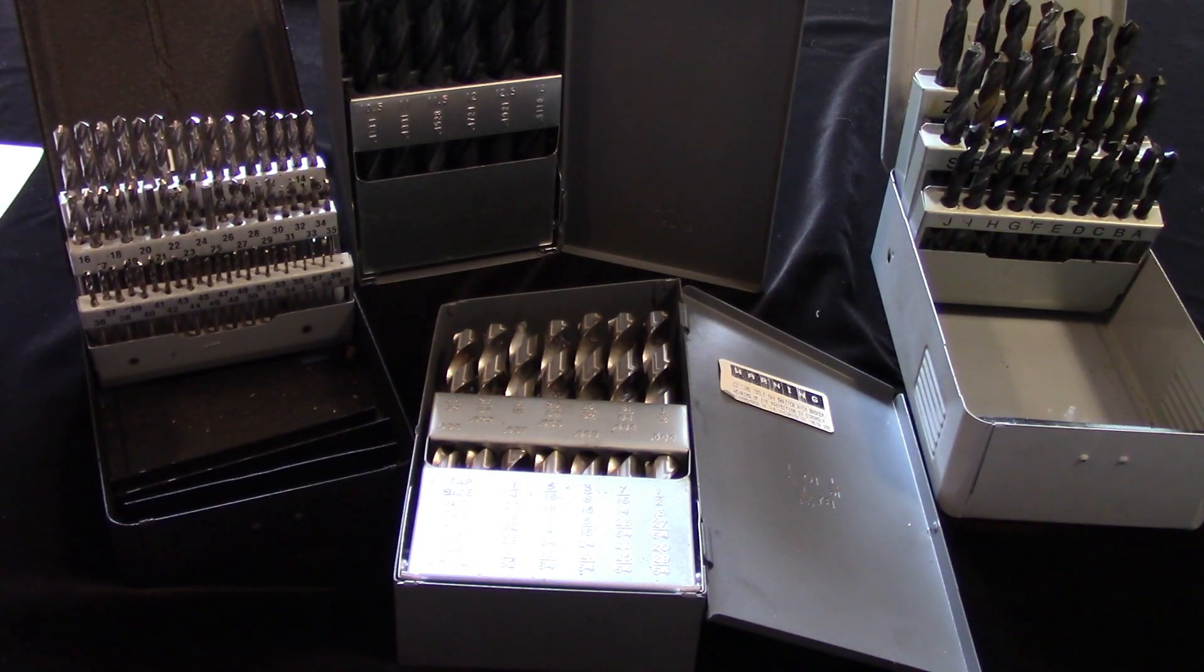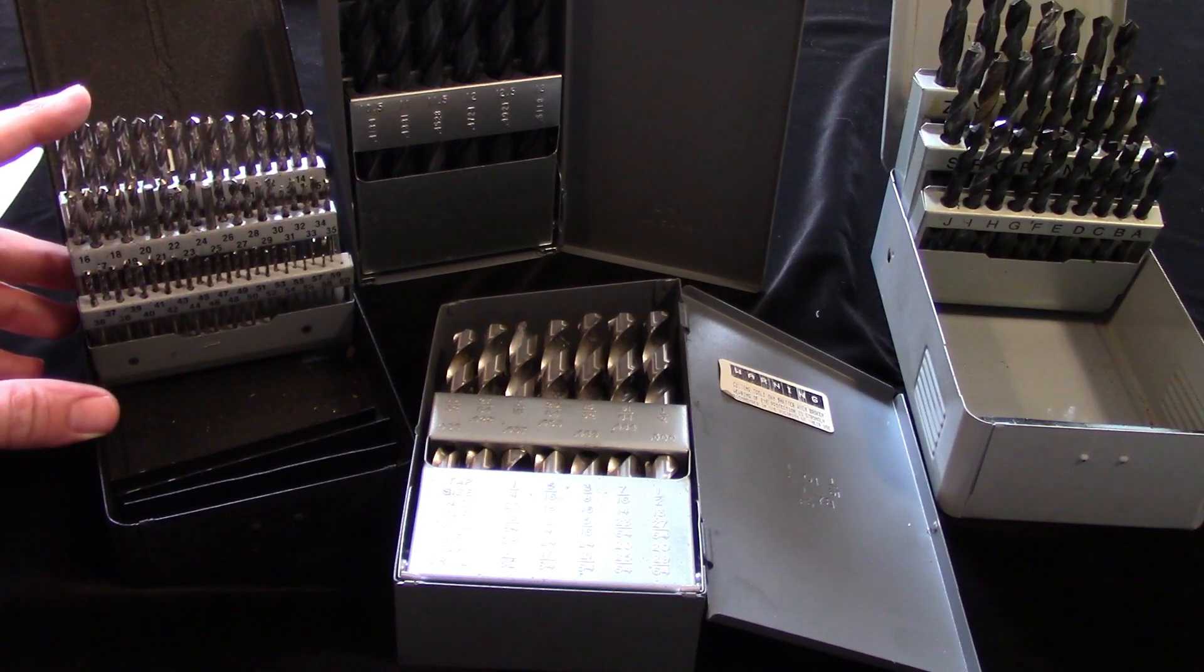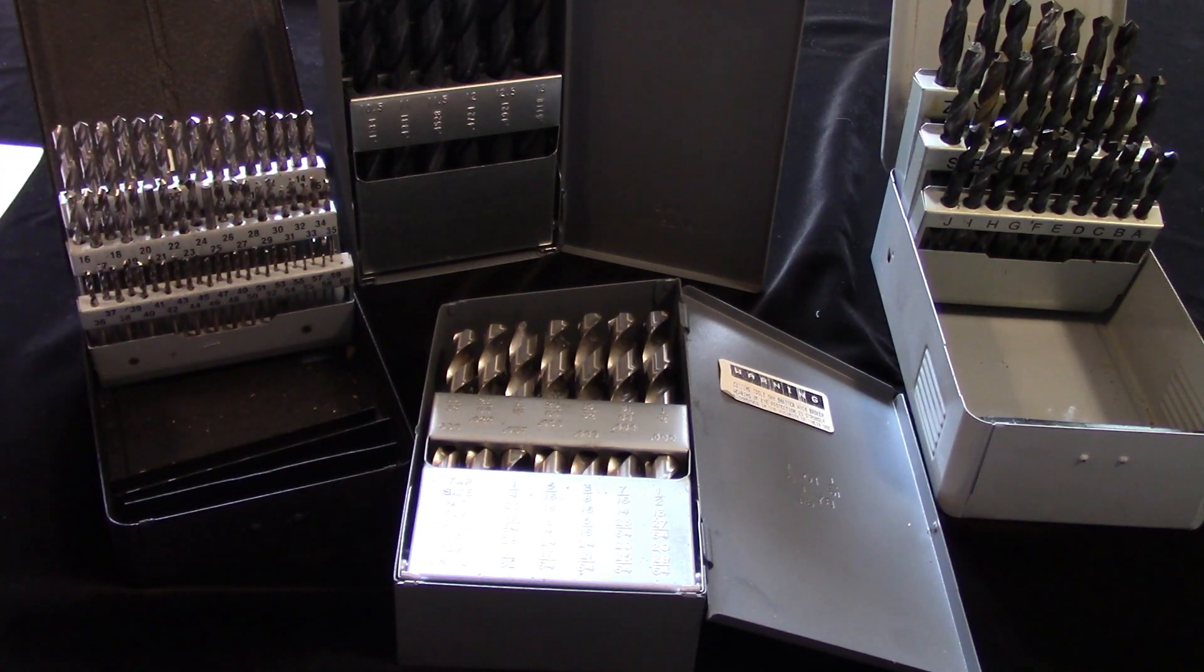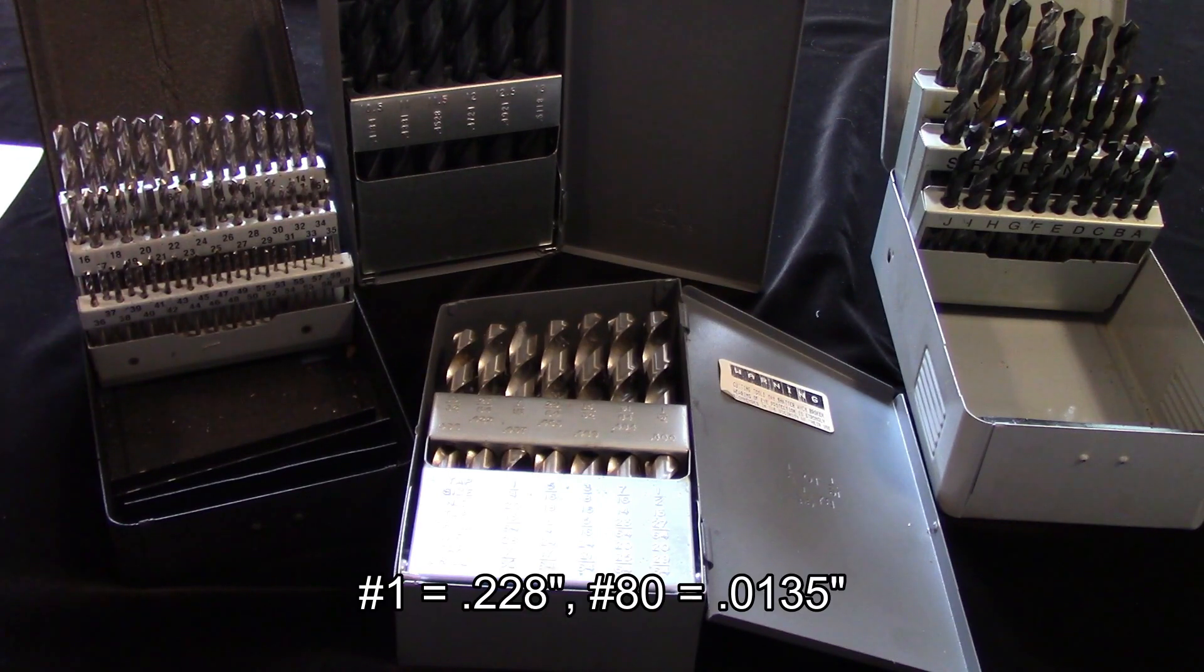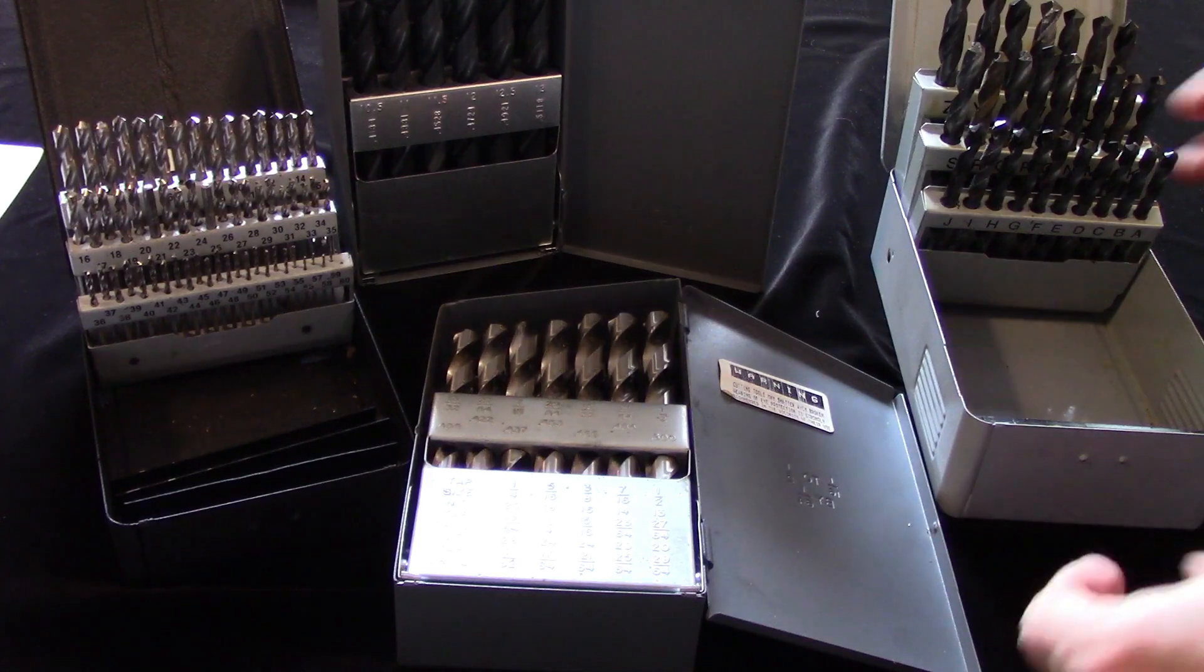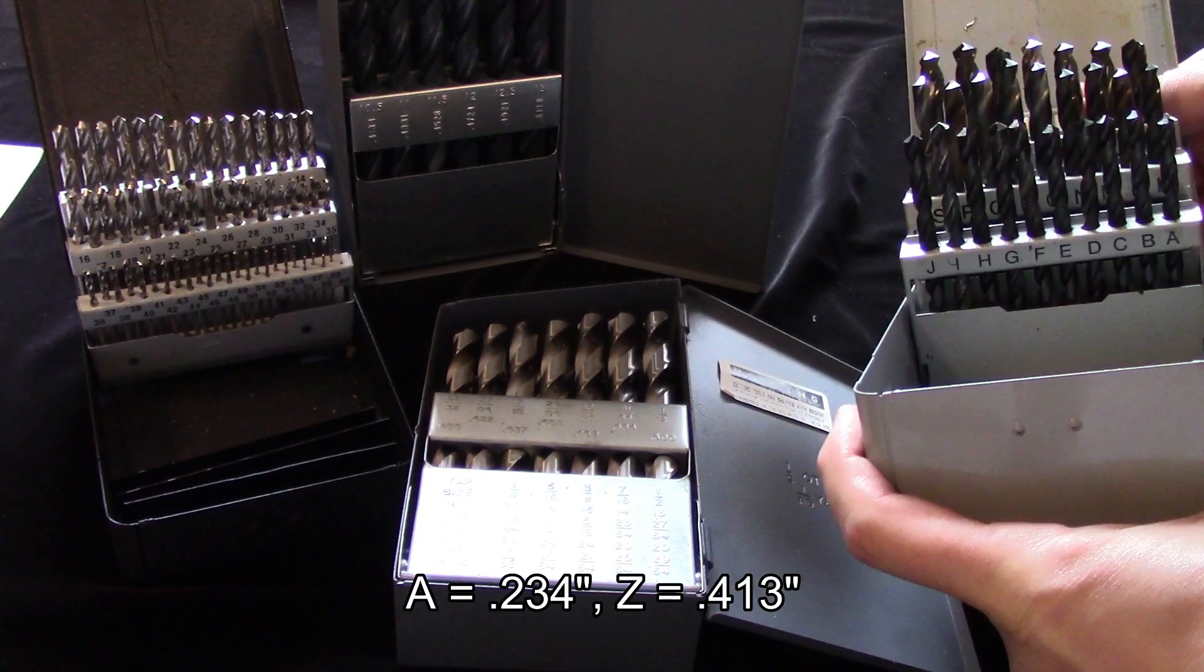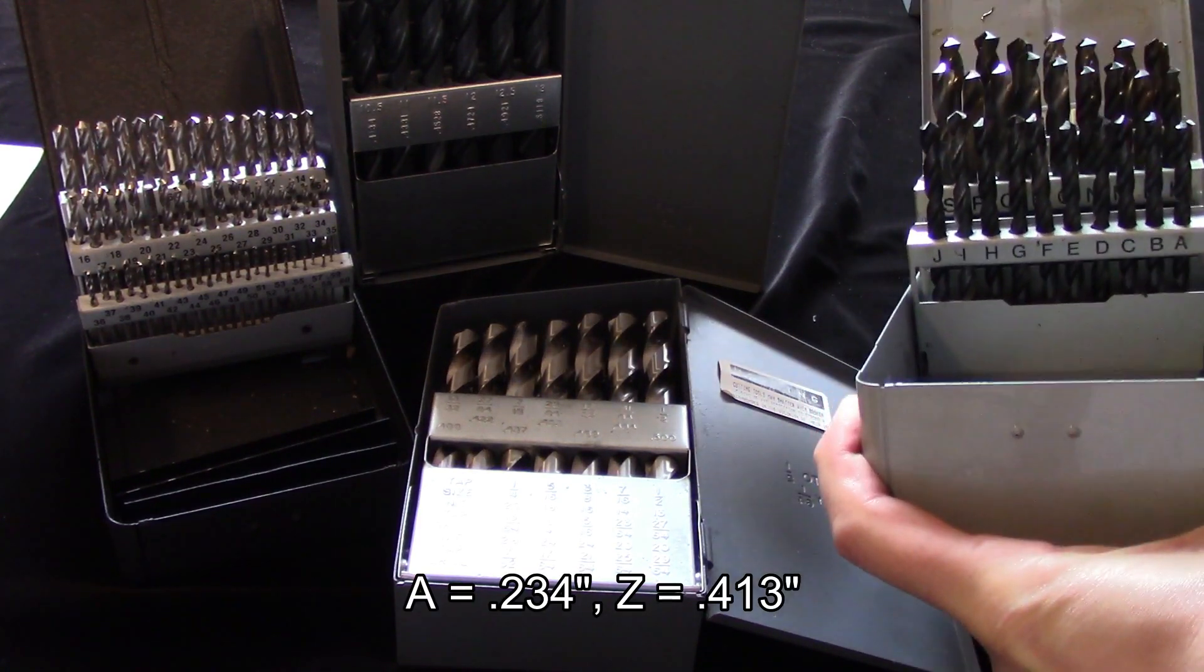Number drills, also called wire gauge drills, are actually sold in two different sets: numbers one through sixty and sixty-one through eighty, with number one being the largest. Letter drills run from A to Z, with Z being the largest.